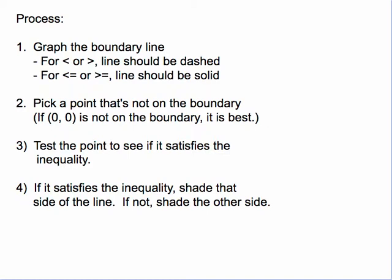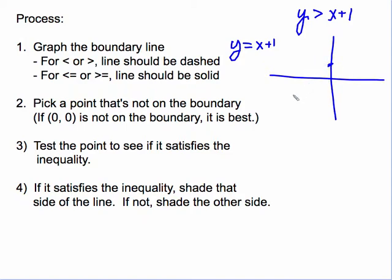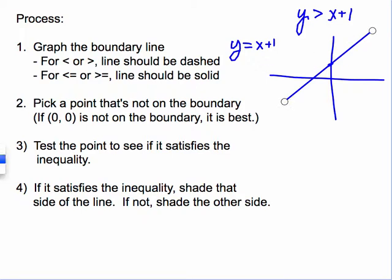Let's take a look at a summary of the process, using y is greater than x plus 1 as an example. The first step is to graph the boundary line y equals x plus 1. We notice that the line must be dashed in this case because we have a strict greater than. For greater than or less than, the line is dashed; if it were less than or equal to or greater than or equal to, the line would be solid.